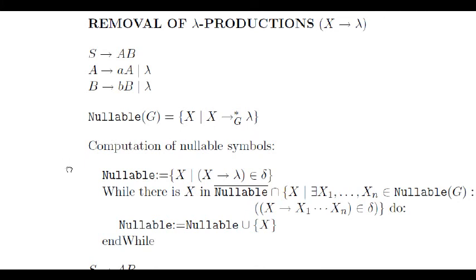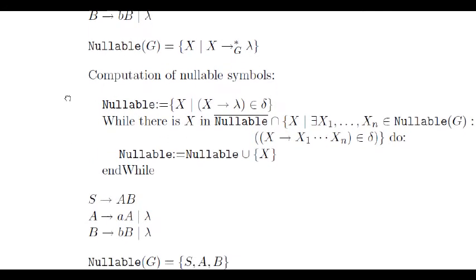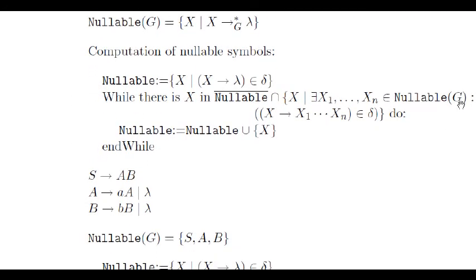Here we have an algorithm for computing the set of nullable symbols. First, we mark as nullable those variables that can be rewritten to the empty string in one step. Next, we keep on marking other symbols as nullables. At each step, if a variable has not been marked as nullable but it rewrites to a concatenation of nullable symbols, it is clear that it is nullable as well. The algorithm ends when no more nullable symbols are detected.